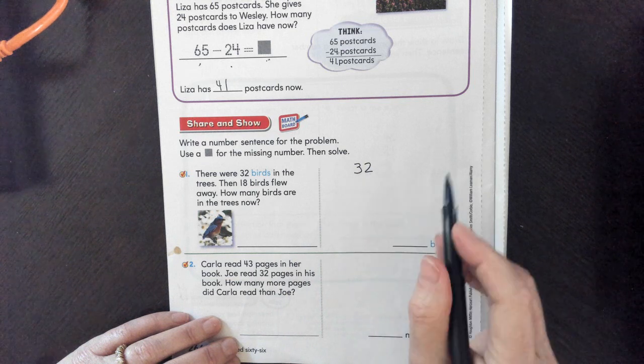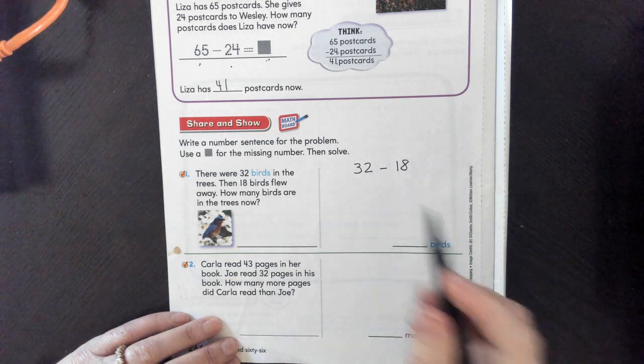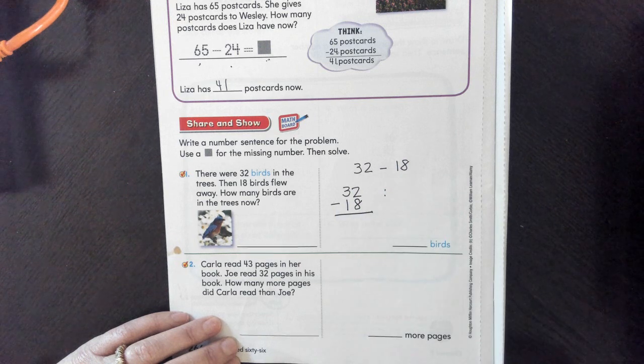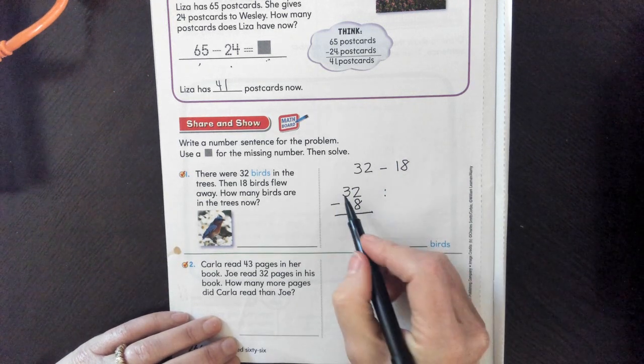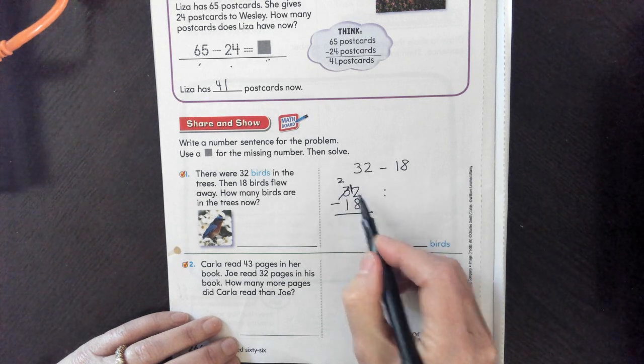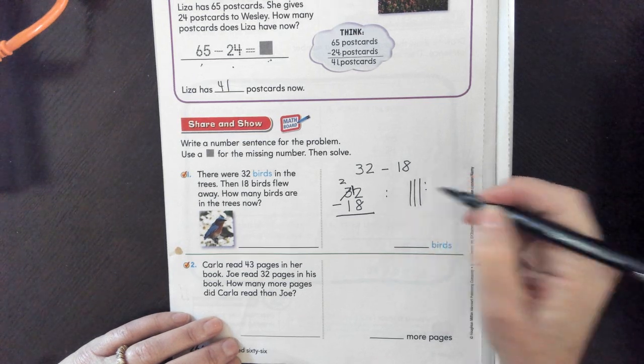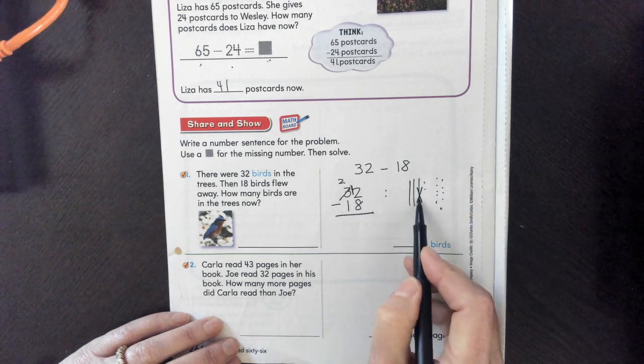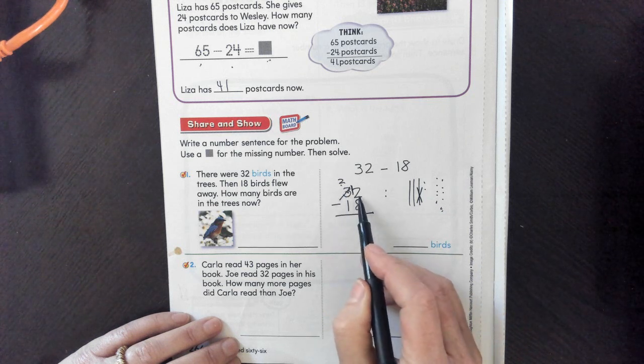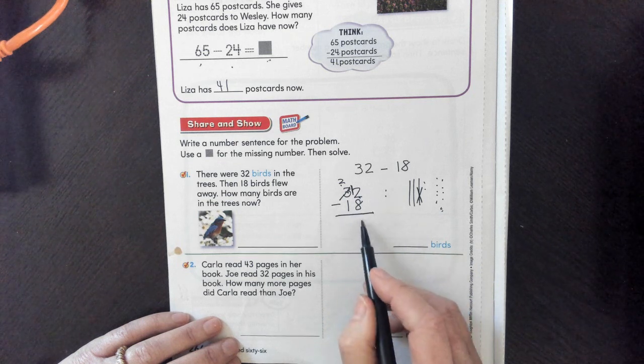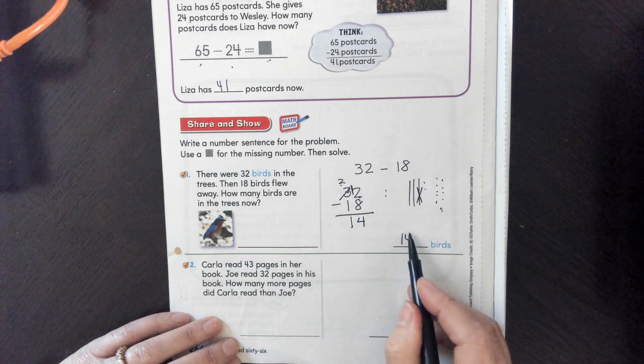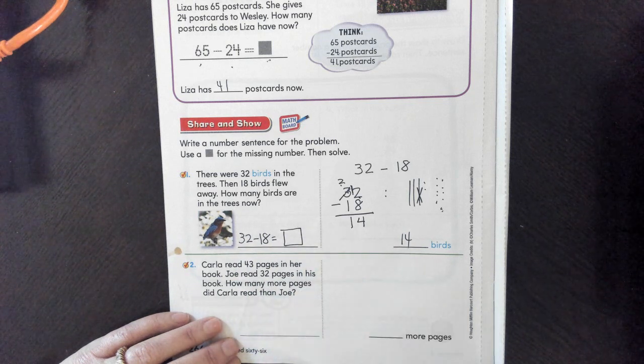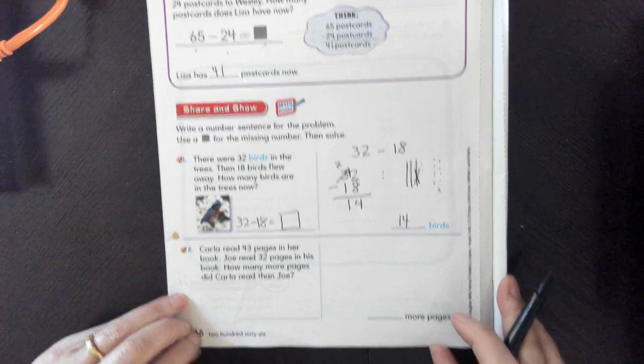So there were 32 birds in the tree. 18 flew away. So we know we're going to take it away. You can line it up the way your parents do. 2 minus 8. Can you take it away? No. So you must take the 10 from here. And now you have 12. So you just started with 32. You need to take away 18. You can't. You have to explode that 10. And that's what we did right there. We took that 10 and put it with the ones. Now we have 12 ones. 12 minus 8 equals 4. 2 minus 1 is 1. So we have 14 birds. And the way this looked is 32 minus 18 equals box. And then we solved for 14. I guess we should have done that first. Let's do that first the second time.